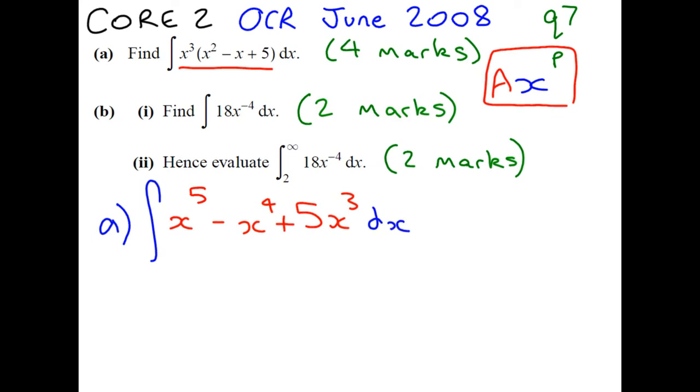Once you have the integration in this form, it's quite straightforward. We're integrating, you increase the power by 1, and you divide by the new power. It's the opposite of differentiating. So we get x to the power of 6 over 6.